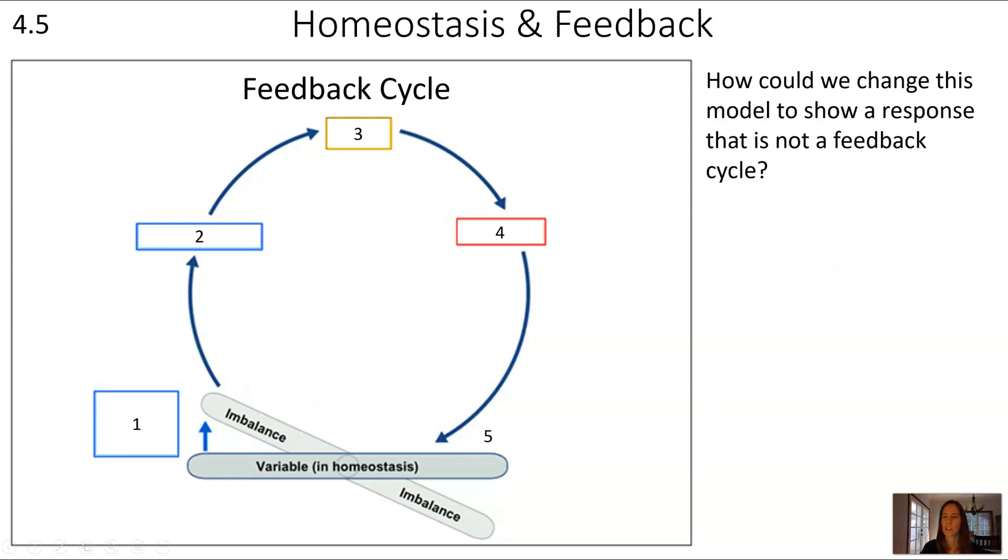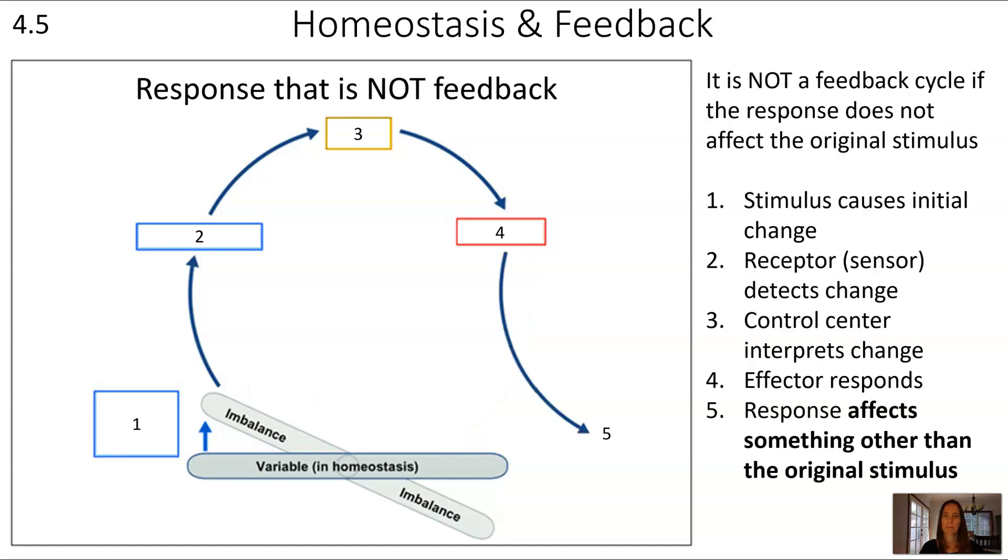That brings us to the question, how could we change this model, this diagram, to show a response that's not a feedback cycle? To change this model to something that's not a feedback cycle, it would just simply be changing the response. When it's not a feedback cycle, you can still have stimulus leading to response, but in this case, the response affects something other than that original stimulus.